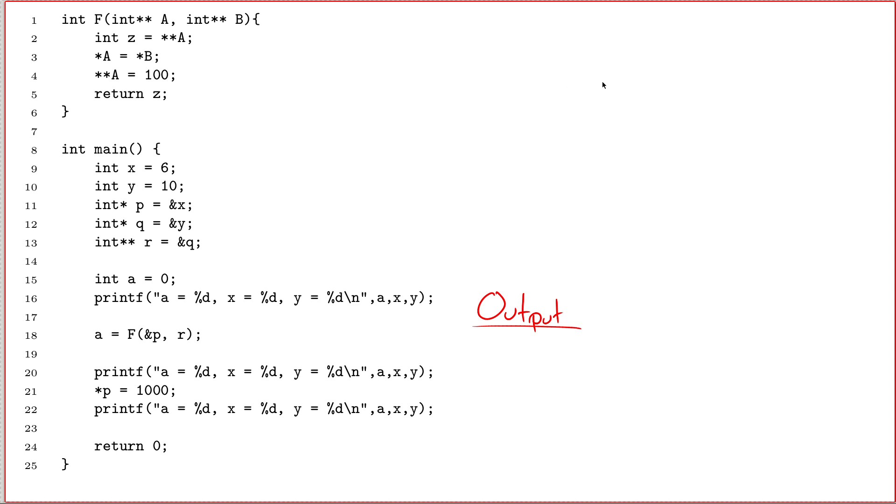So here's a tracing example that involves pointers with two stars, int star star. Just like usual, the key here, in my mind at least, is draw a diagram.